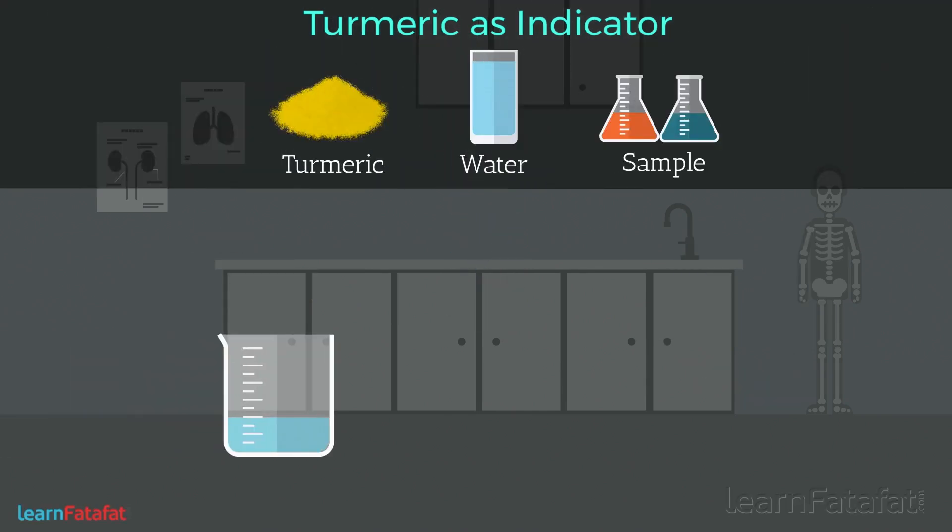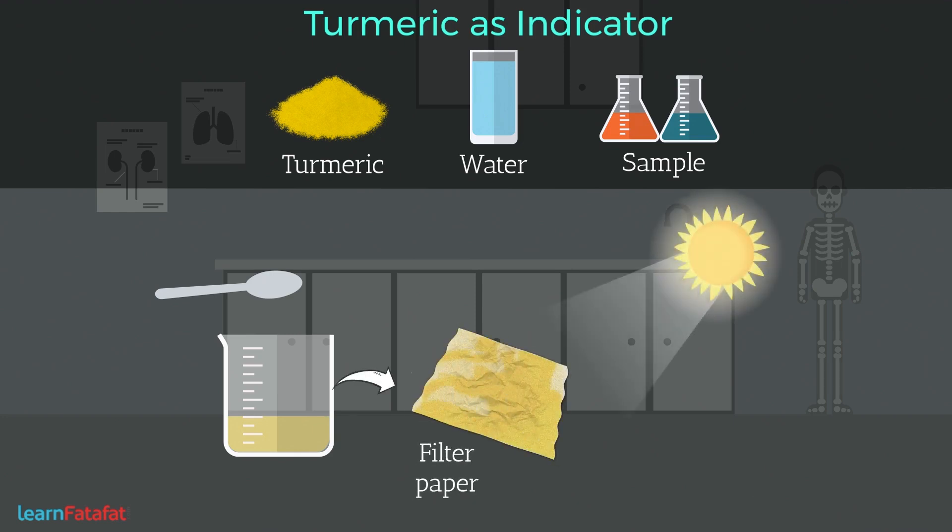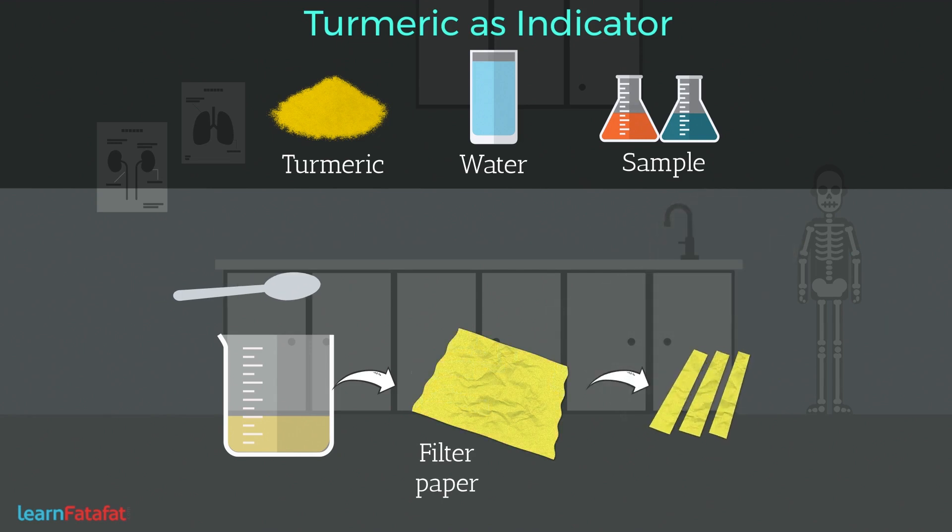Take some water in a beaker, mix a tablespoon of turmeric powder in it and produce turmeric paste. Apply this paste on filter paper and dry it. Make strips of this paper.